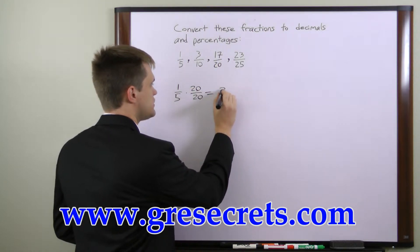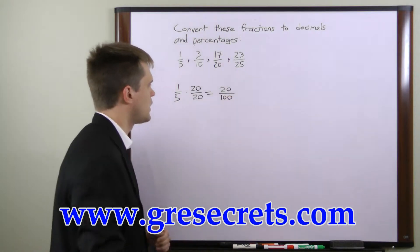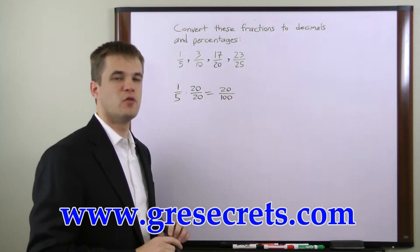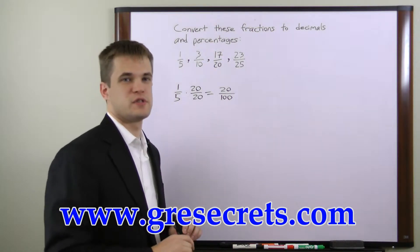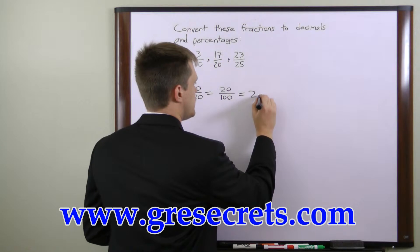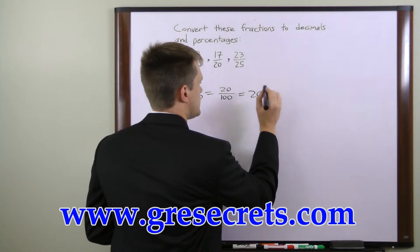1 times 20 is 20. 5 times 20 is 100. Now once you have your number over 100, all you have to do is write the numerator as a percentage. So 20 over 100 equals 20%.